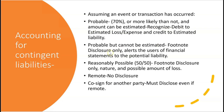What if it's probable but you cannot estimate the amount? Then it's just a footnote disclosure — no journal entry, don't accrue the loss. Just alert users of the financial statements to the potential liability by disclosing the nature of the event. To book it, it must be probable and reasonably estimated. If it's not probable — if it's only reasonably possible, like 50/50 — then it's footnote disclosure only. Even if you can estimate the amount, you won't book it unless it's both probable and estimable. It's a word game.